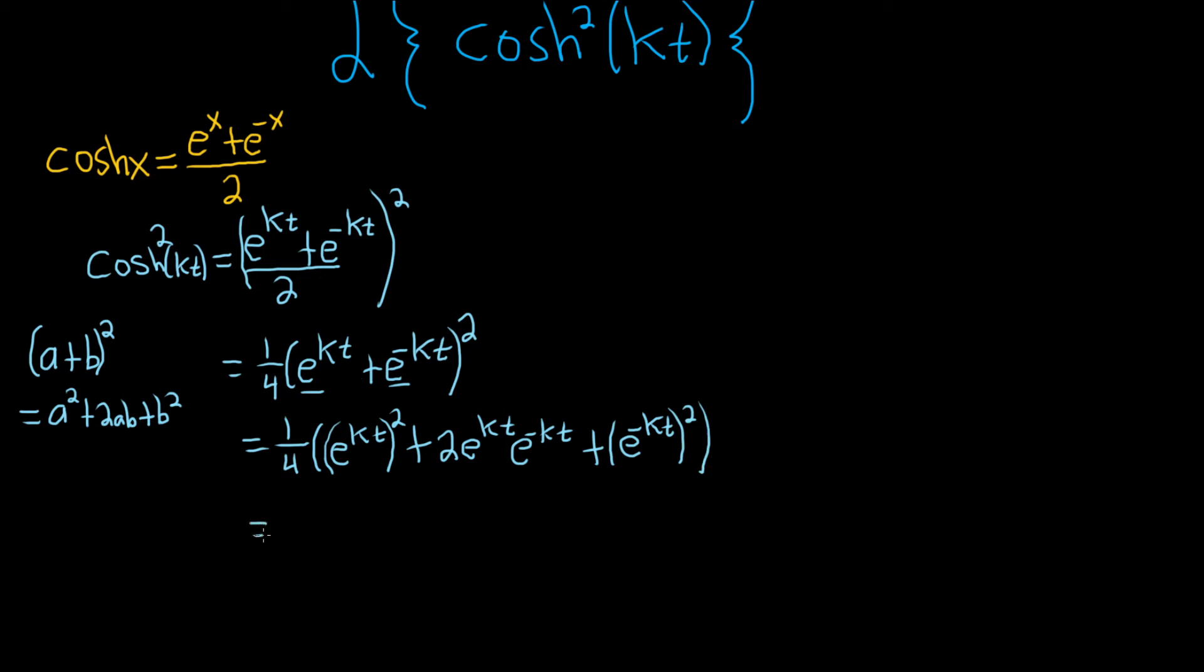All right, so this is equal to one-fourth. Here, you can use properties of exponents. Basically, you just multiply, so 2 times kt would be e to the 2kt. These cancel, really nice, plus 2, plus, and then here, same thing, properties of exponents, so that'll give us e to the negative 2kt.